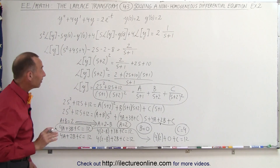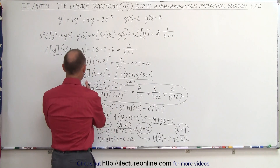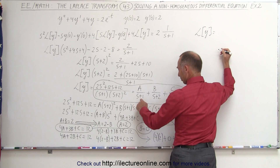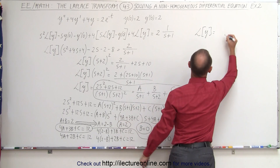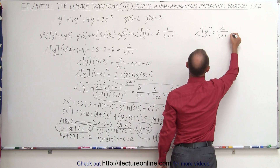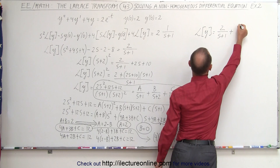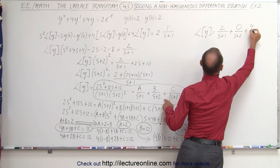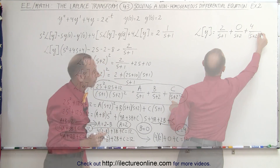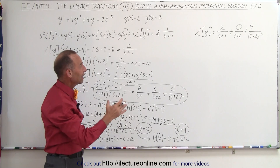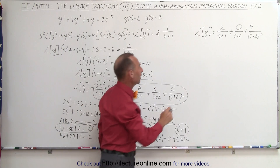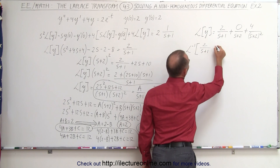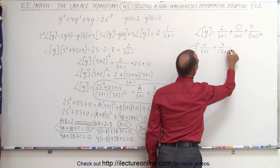Now we have A equals 2, B equals 0, and C equals 4. Plugging those into the partial fraction expression, the Laplace transform of y equals 2 over s plus 1, plus 0 over s plus 2 (which drops out), plus 4 over s plus 2 quantity squared. So we are left with 2 over s plus 1 plus 4 over s plus 2 squared, and all we need is the inverse Laplace transform.